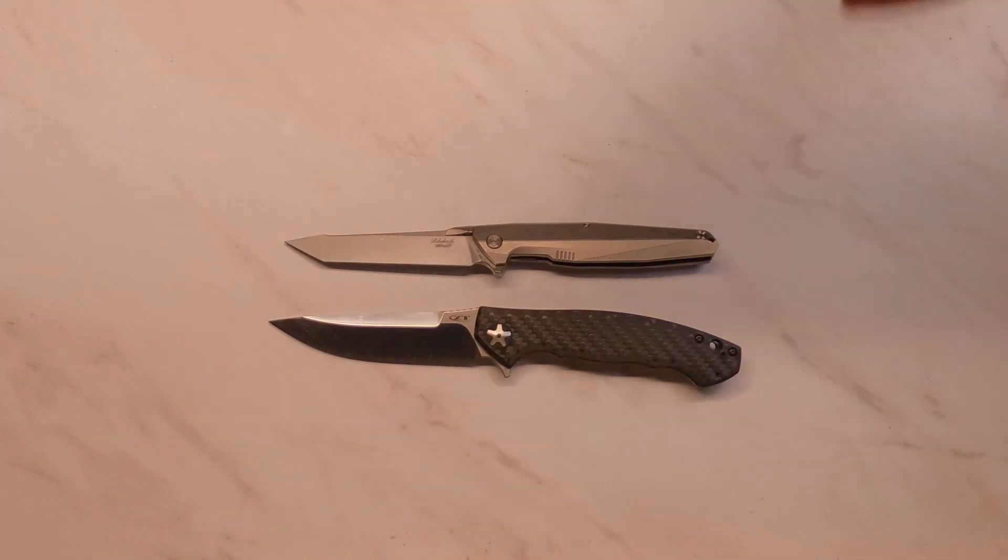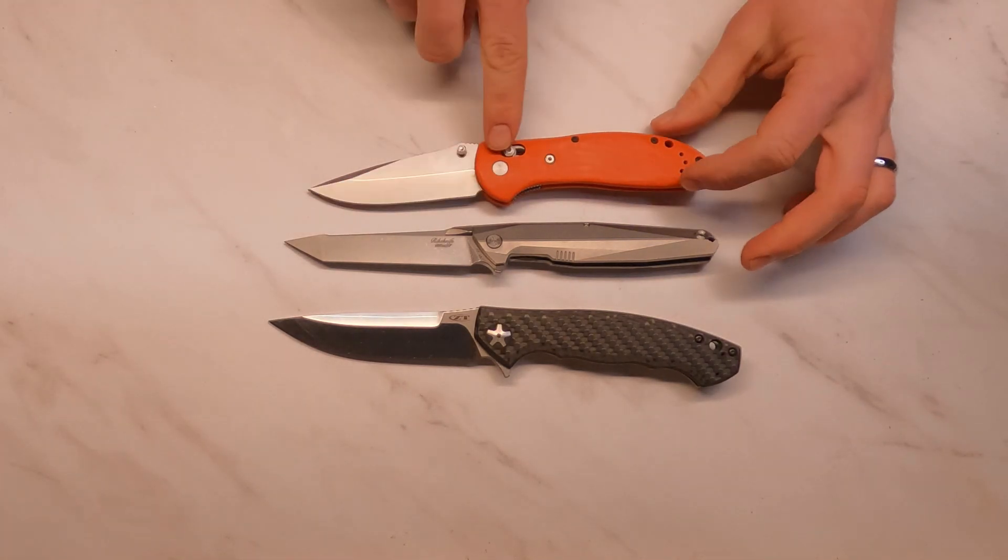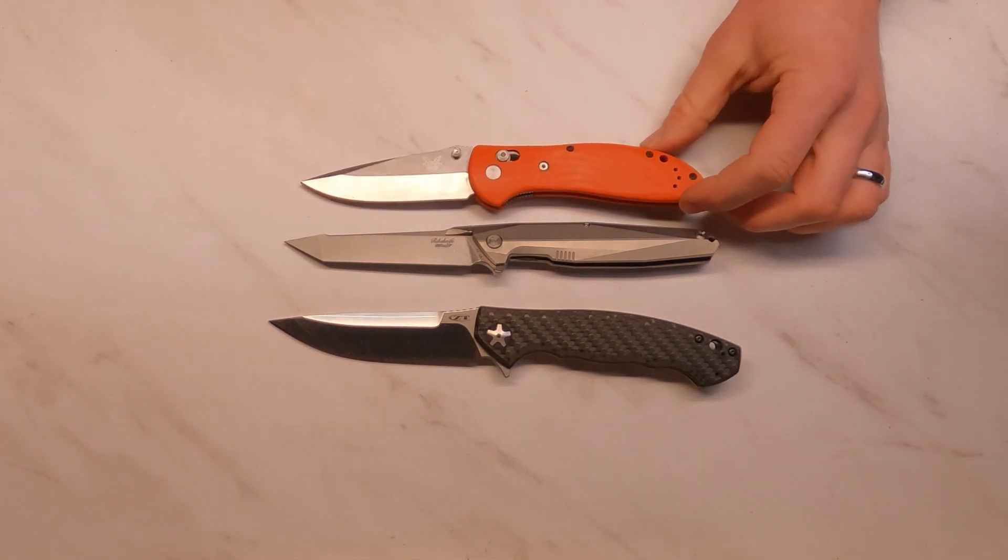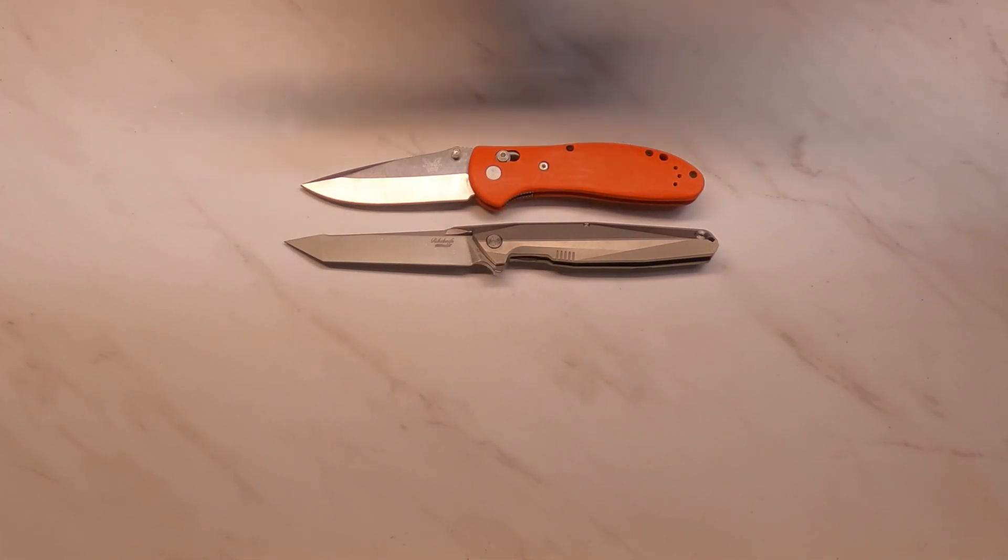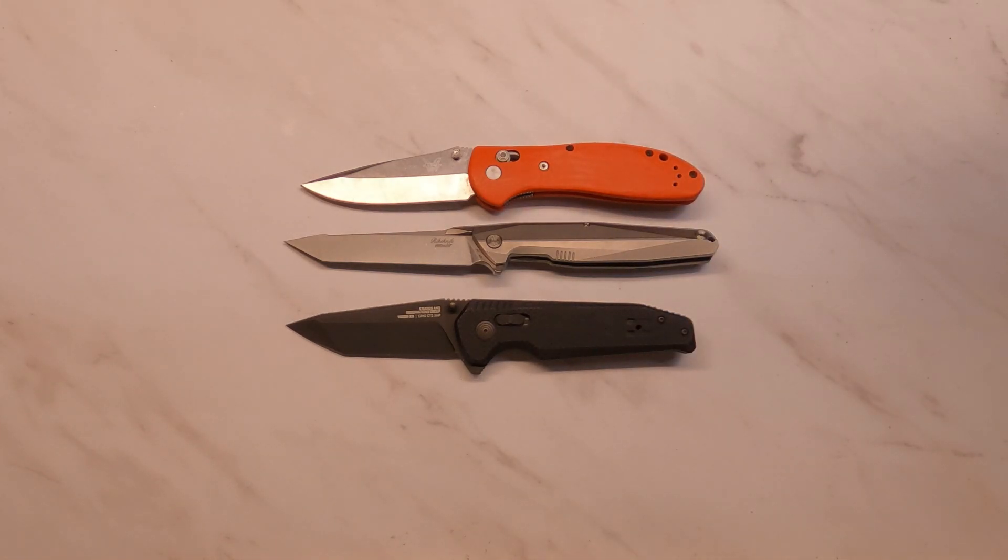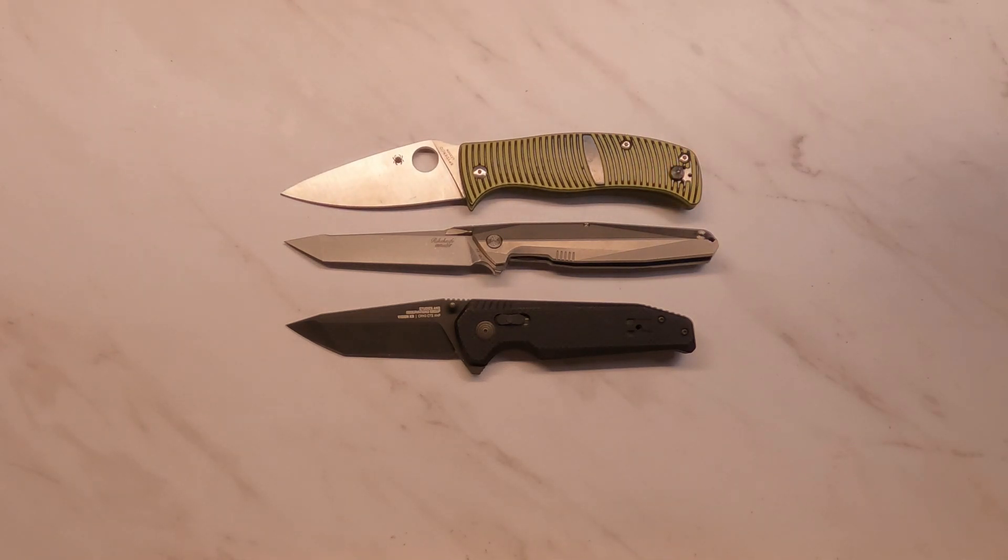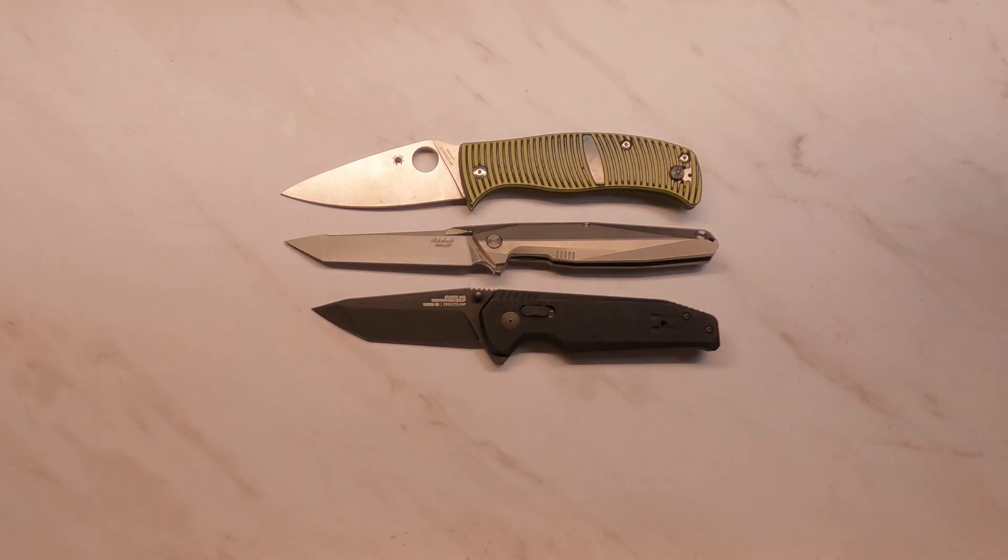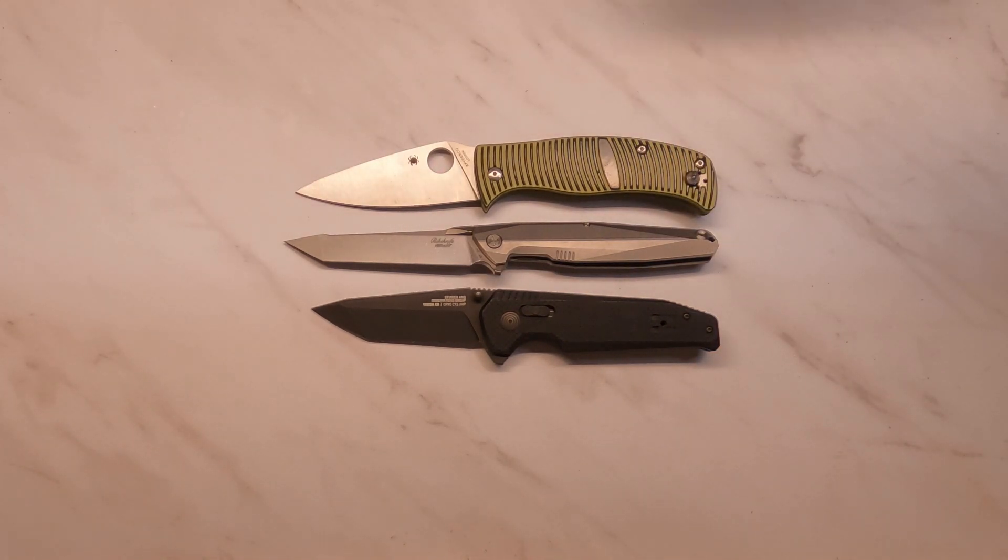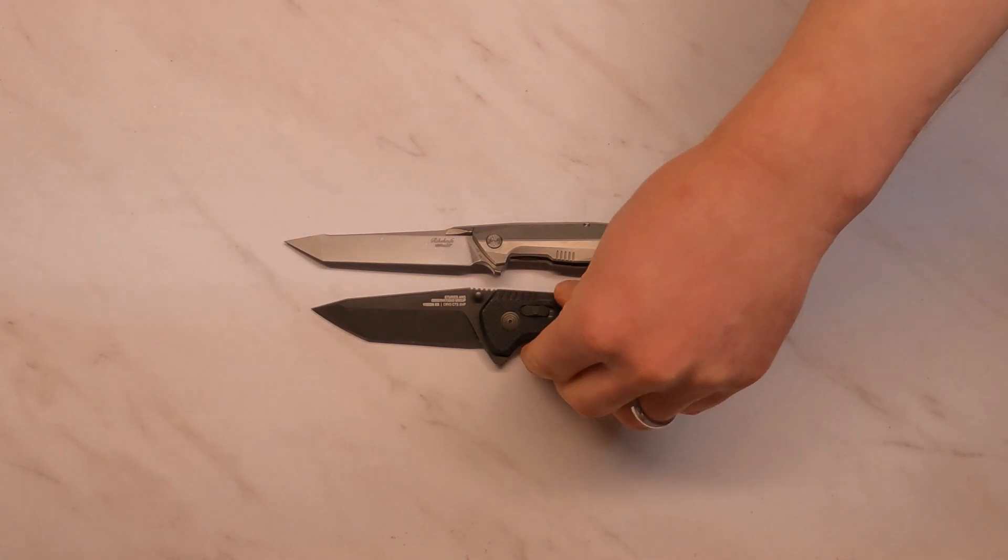For size comparison, I already had the Zero Tolerance 0452 Carbon Fiber out there, so you can see it's pretty similar. Let's go with the standard Benchmade Griptilian - you can see this is longer and thinner both in handle and blade. Here is a SOG Vision XR, that's one I haven't had on here in a while, and a Spyderco Caribbean, which is also a large knife. These are fairly large knives so you can get an idea of where this falls along the spectrum.